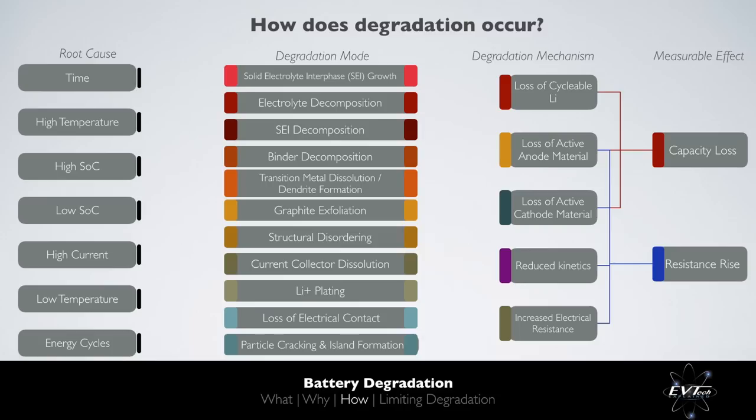From our resistance rise measurements, we can determine how much more difficult it has become for lithium ions to move between the anode and cathode and, as a result, how much additional heat will be generated.